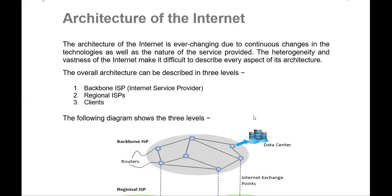Our topic is architecture of the internet. Internet architecture is ever changing due to continuous changes in technologies as well as the nature of services provided. The heterogeneity and vastness of the internet make it difficult to describe every aspect of its architecture. The overall architecture can be described in three levels.